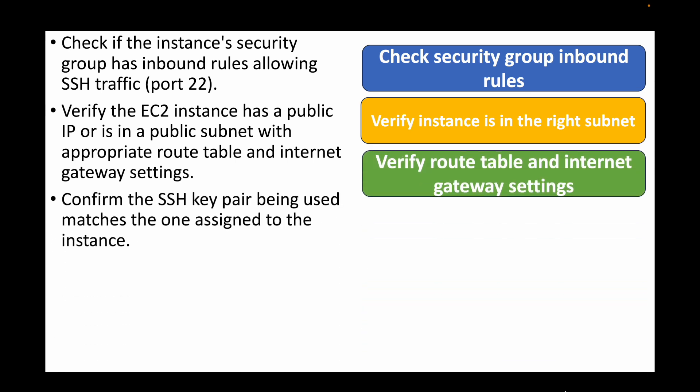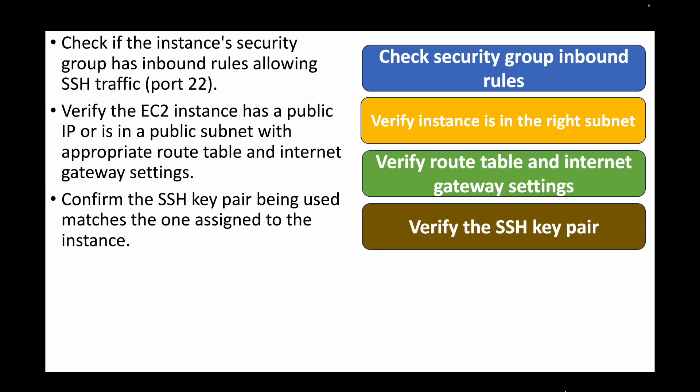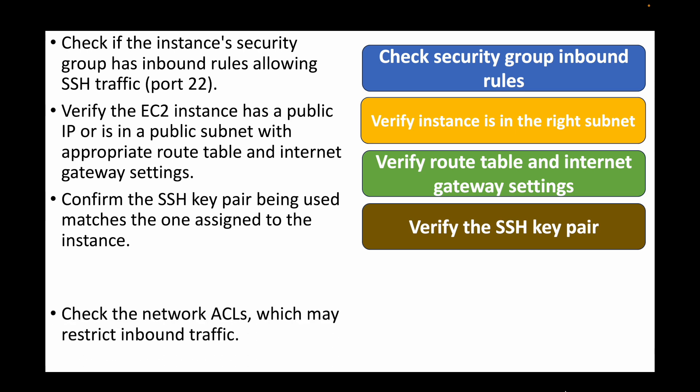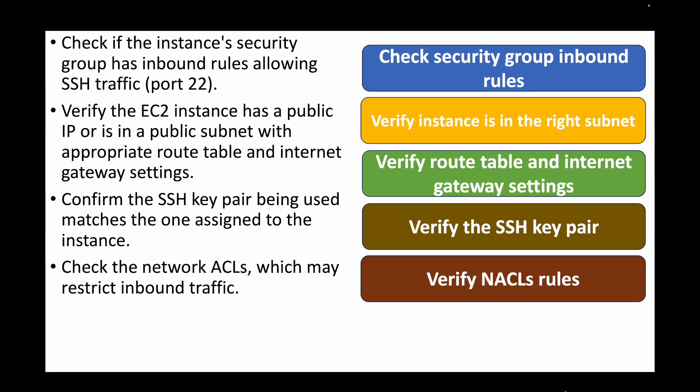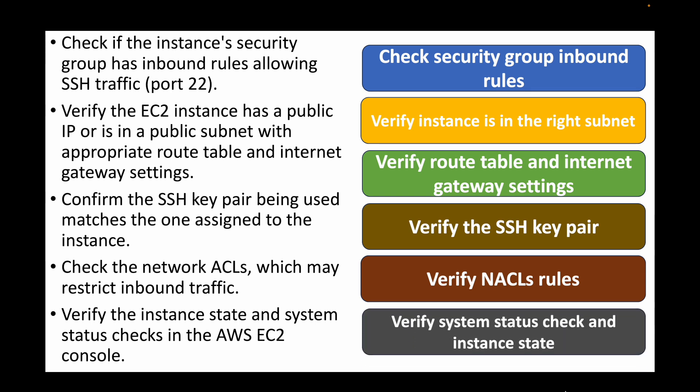We will also need to check if you are using the right key pair to connect to the machine — the key pair attached to the instance and the key pair used for SSH should match. We can also check the network ACLs to see if we are restricting any inbound traffic. Finally, validate the instance state in the AWS console and the system status checks to make sure there is no issue with the instance itself from the AWS side.